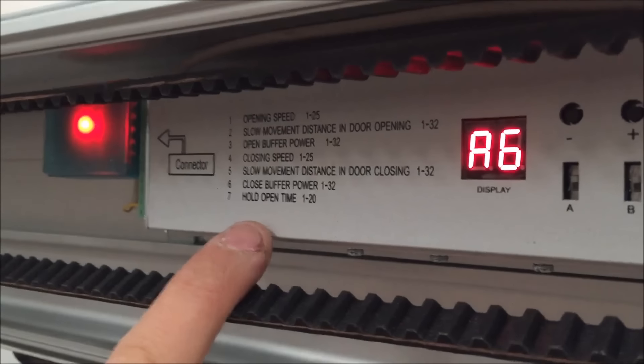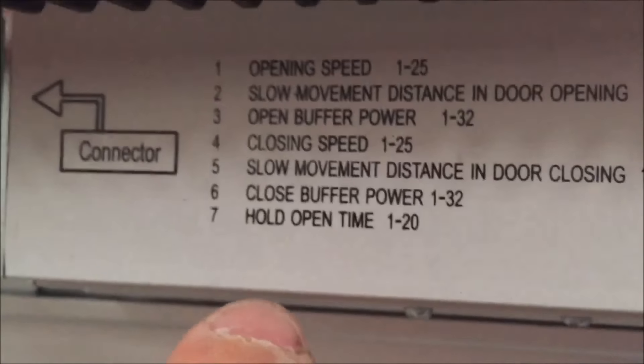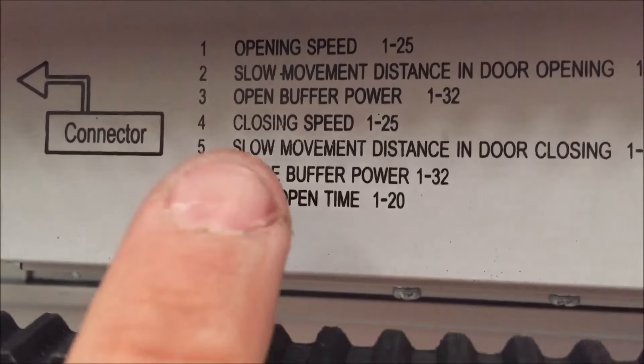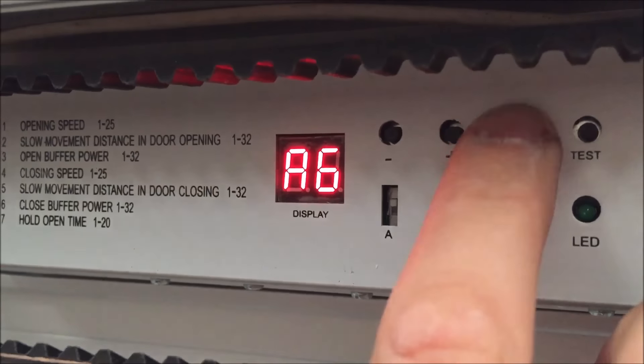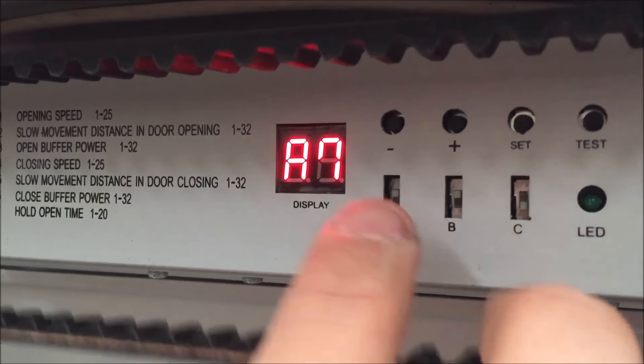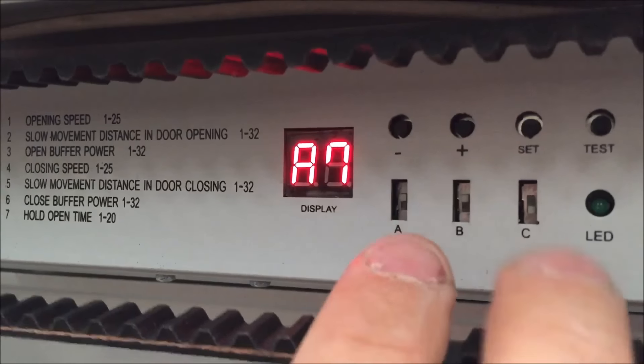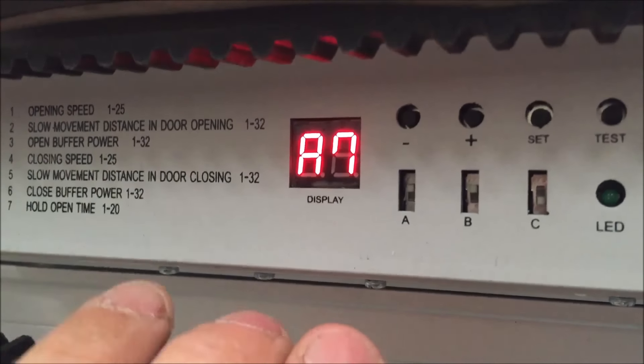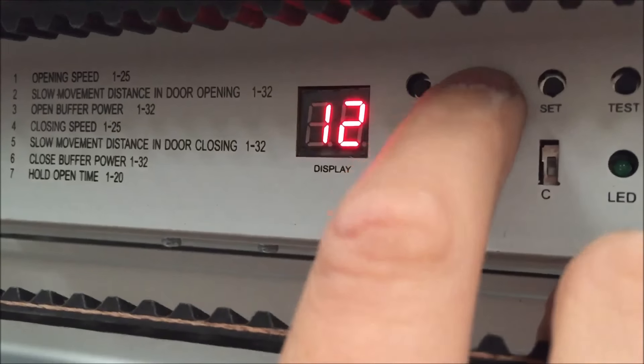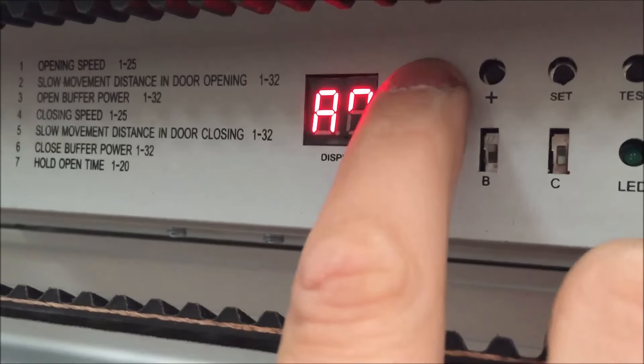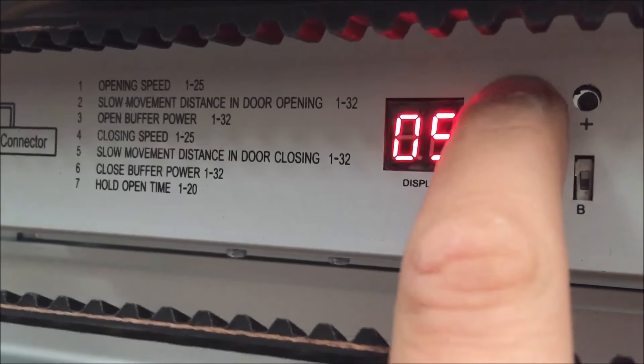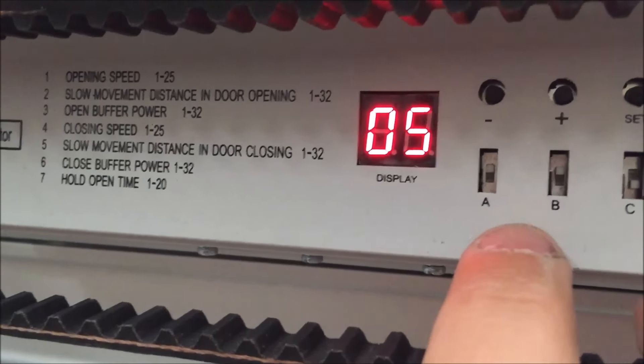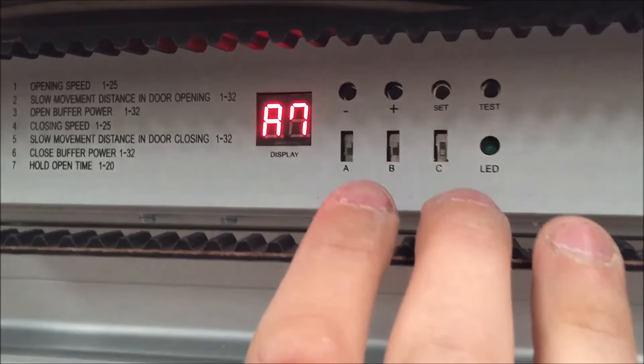Para el menú 7, que es el tiempo que la puerta está abierta si no detecta nadie, nos vamos lo mismo con la tecla set hasta el menú 7. Y ahí seleccionaremos un valor entre 1 y 20. En este caso tenemos el 12, pues lo vamos a bajar también bastante hasta el número 5, para que nuestra puerta esté muy poco tiempo abierta.